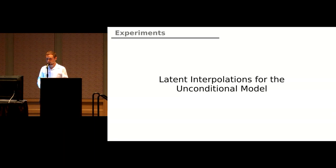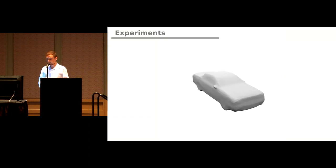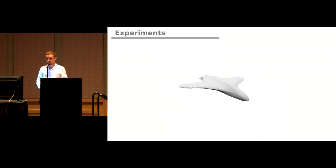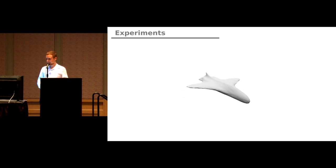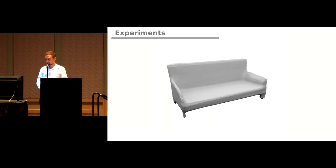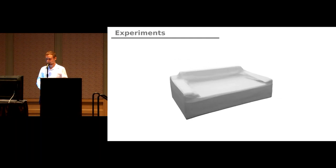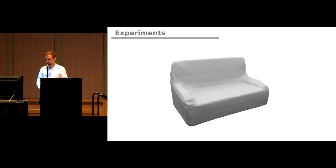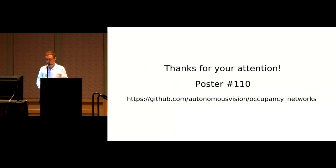We can also use our method in the context of latent variable models. We trained a variational autoencoder to obtain a generative model of 3D shapes, showing 3D decodings when linearly traversing the latent space for different object classes. Please come to our poster for more details.